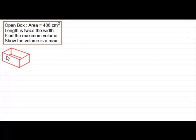What we've got here is an open box. And we're given that the total surface area is 486 cm² and the length is twice the width. What we've got to do is find the maximum volume and show that that volume is a maximum. Now if you're given a problem like this, always draw a sketch. And so I've drawn my open box and you can see inside, you can see that it's open because I've included these edges here.